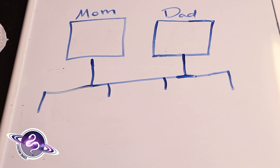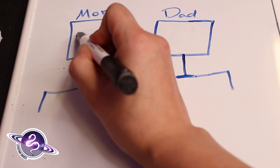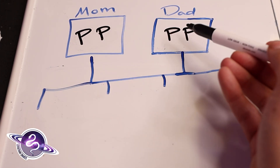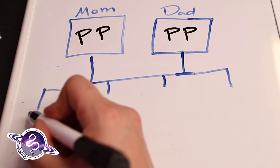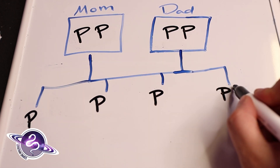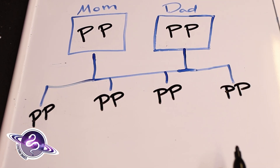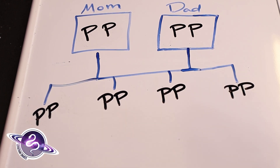I'm going to use pied as an example, but this goes for albinos, clowns, azanthics, desert ghosts, sunset ghosts, hypo — all of those recessive genes. If we had a visual pied female and a visual pied male, each parent will give off one of these genes to each of their eggs. No matter what, mom is going to give a pied gene to each egg, and no matter what, dad is going to give a pied gene to each egg. So in this case, 100% of the eggs will have the visual appearance of piebald.